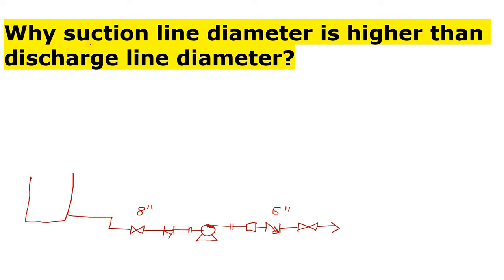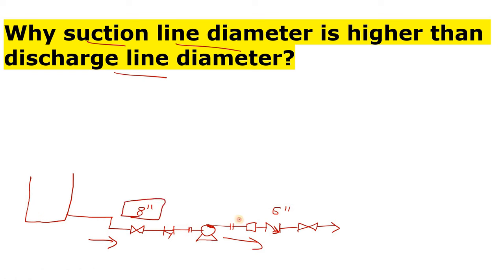There is one question: why is the suction line diameter higher than the discharge line diameter of a centrifugal pump? Here you can see this is my centrifugal pump - this is the suction line and this one is my discharge line. The question arises: why does the suction side have a larger diameter and the discharge side have a lower diameter?